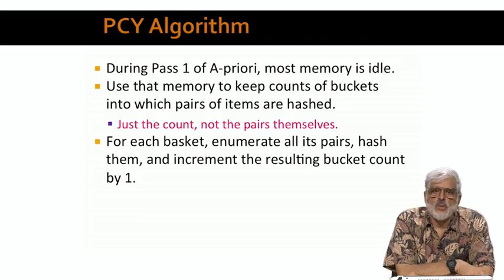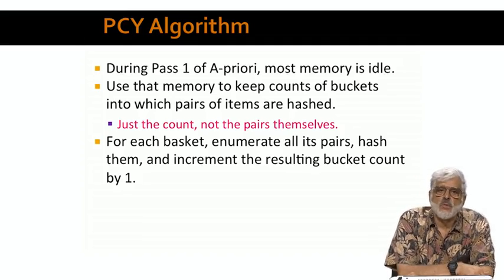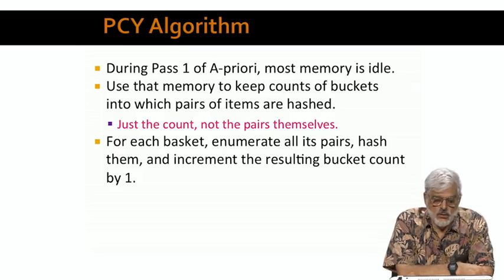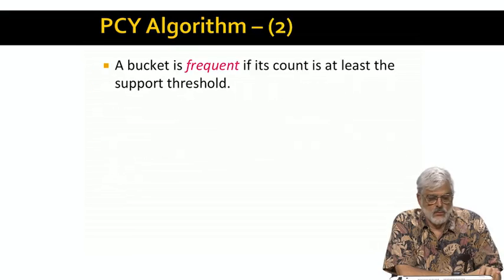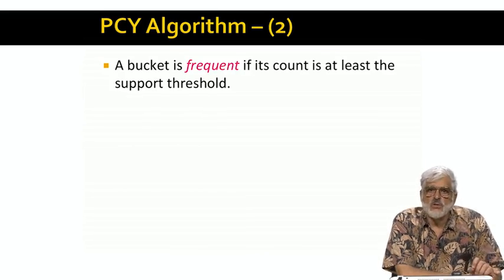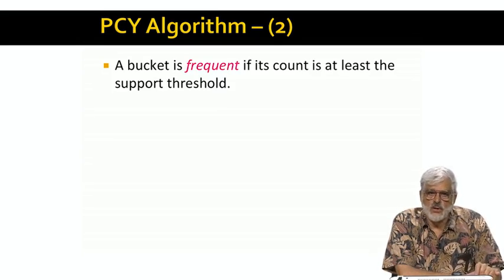On the first pass, when we read a basket, we not only increment the count for each of its items, as we did for the first pass of A Priori — we also hash each pair contained in the basket, and for each resulting bucket, we increment its count by 1. Now let's call a bucket frequent if, after the first pass, its count is at least equal to the support threshold. A bucket could become frequent simply because many pairs each contribute a little to its total count. We can't tell if that's the case because we only had room to remember the total, not the count of each individual pair.